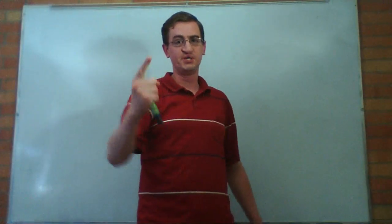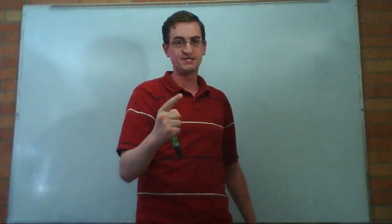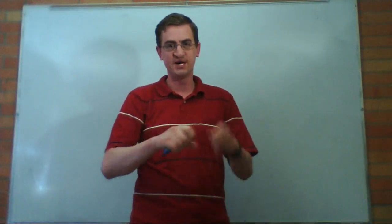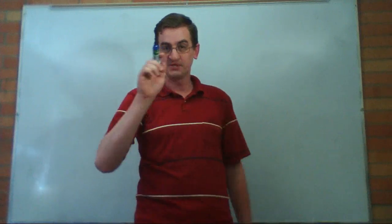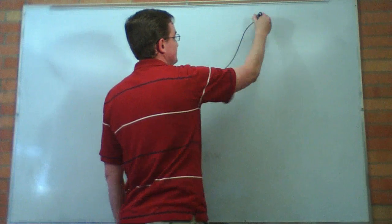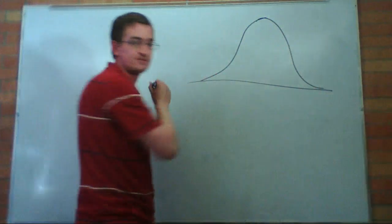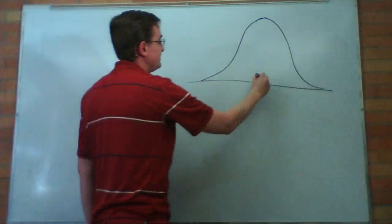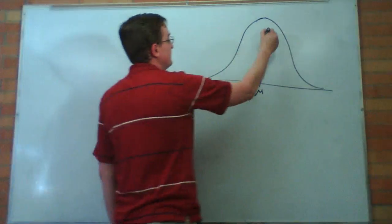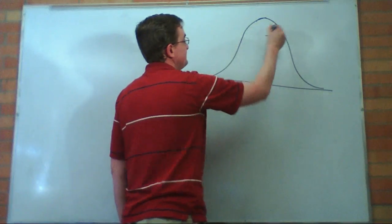These are the voyages of the statistics introductory class, its continuing five month mission to seek out and understand new science. Today we are going to talk about the normal distribution. Here is what it looks like, you can see it is sometimes called the bell curve. Here is where the mean is, mu, and here is the standard deviation.